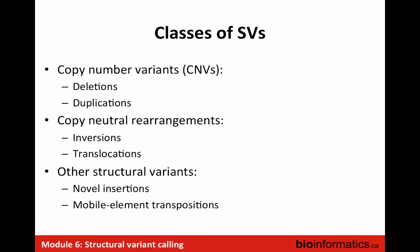The different classes of structural variants: you've got copy number changes — the deletions and duplications — where you're changing the number of copies of a particular section of the genome. You have rearrangements that are copy neutral, like inversions, which don't change the content but change the order. Same with translocations. And then other structural variants like normal insertions of sequences and transposons jumping around.